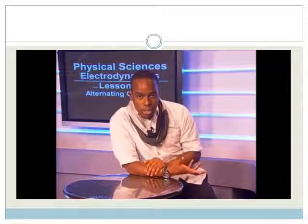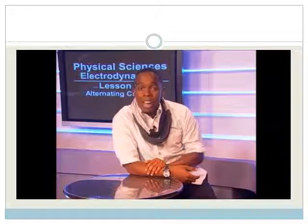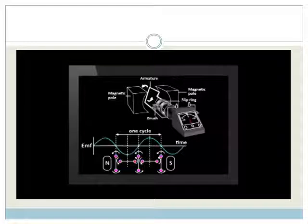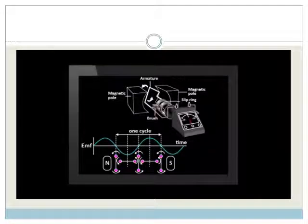Tesla had also invented the alternating current generator, which did not need a split-ring commutator, and was therefore more efficient. We now all use Tesla's system of alternating current because of those reasons.